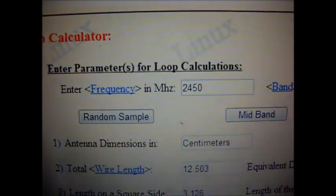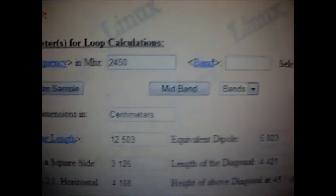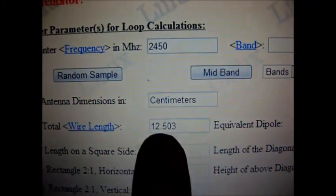And what you do is you plug in your frequency you want. And then say, I want it in centimeters. It's designed for a much larger antenna. So you see it has meters and feet. Then it comes out. Total wire length here. This is the wavelength of the antenna.